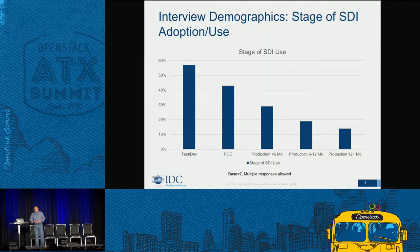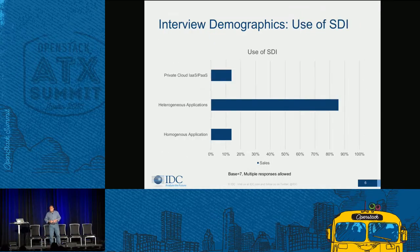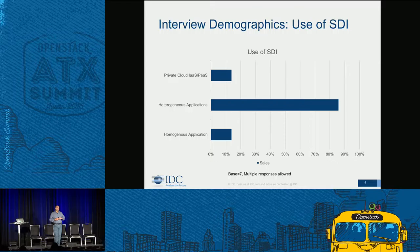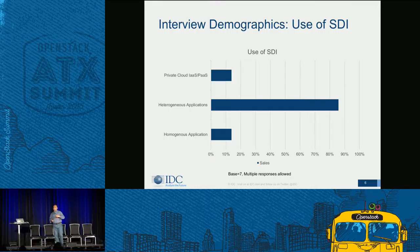How are people deploying software-defined infrastructure? Heterogeneous applications is the most common use case. Private cloud and infrastructure as a service is lower. From an application perspective, different types of projects move to SDI more quickly than a software-as-a-service use case, and homogeneous applications are quite low from that perspective.